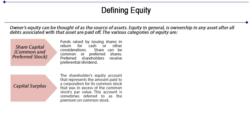The amount transferred to the share premium account may be used for paying up unissued shares to be allotted to members as fully paid bonus shares, or in writing off those shares. The company can also use this amount to pay the preliminary expenses or startup expenses. It can also be used to pay the expenses of, or the commission paid or discount allowed on, any issue of shares or debentures of the company, or in providing for the premium payable on redemption of debentures of the company.